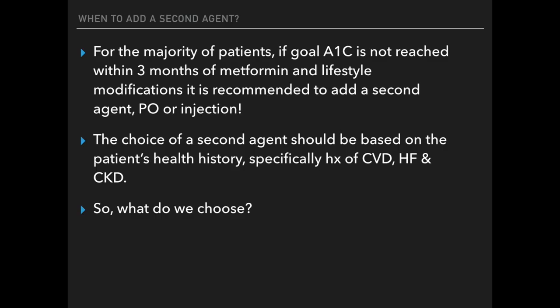For the majority of patients, if the goal A1C isn't reached within the first three months of metformin and lifestyle modifications, it's recommended that we add on a second agent — either another oral drug or an injection. This is when we get into the DPP-4, GLP-1, and SGLT classes. When choosing a second agent, these need to be based on our individual patient health history, factoring in cardiovascular disease, heart failure, and chronic kidney disease.